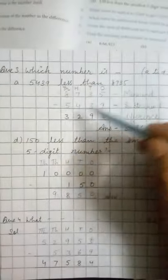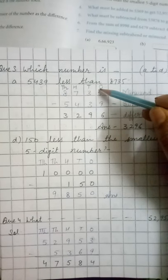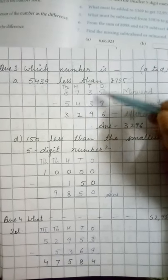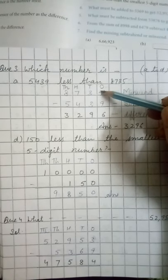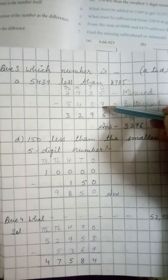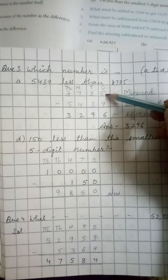After arranging them, we will subtract these numbers. So, 5 minus 9. 5 is less than 9.